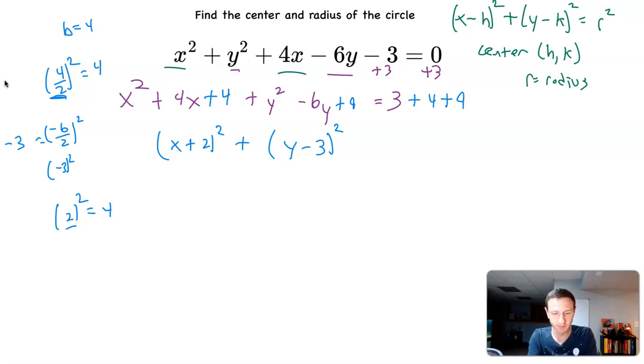But that's not this lesson. Just kind of throwing that out there. And then we have on the right side, 3 plus 4 plus 9. That is going to be 16. 3 plus 4 is 7. 7 plus 9 is 16.